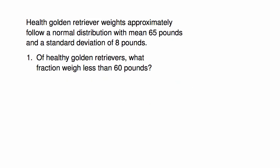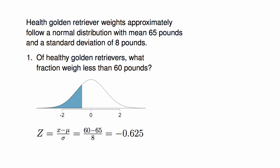Of healthy golden retrievers, what fraction weigh less than 60 pounds? To find this answer, we'll start by drawing a plot and finding the z-score. The z-score can be computed by taking the cutoff for the area, which in this case is 60 pounds, subtracting the mean, and then dividing by the standard deviation. So 60 minus 65 divided by 8, which comes out to be z equals negative 0.625.